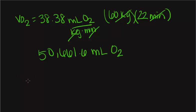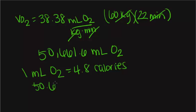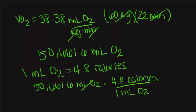From a previous slide in lecture 5, we know that 1 milliliter of O2 is equal to 4.8 calories. To convert our value, we take 50,661.6 milliliters of O2 multiplied by 4.8 calories over 1 milliliter of O2. The milliliters of oxygen cancel out, giving us 243,175.68 calories.